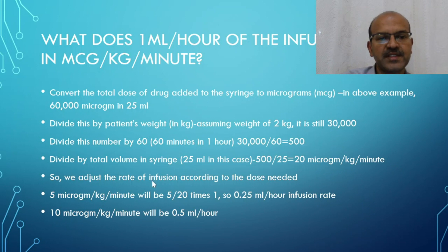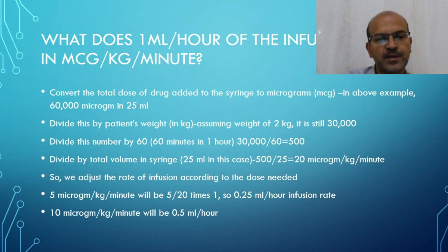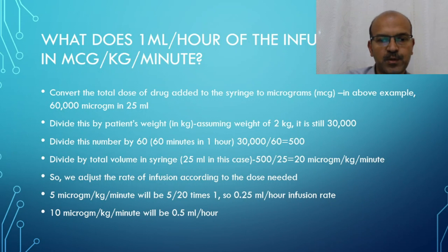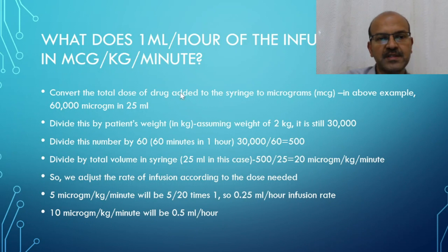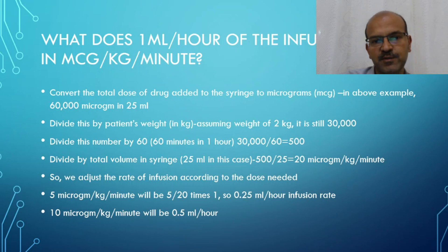We adjust the infusion rate according to the dose needed. If you need 5 micrograms per kilogram per minute, that is one-quarter of 20, so the rate is 0.25 mL per hour. If you need 10 micrograms, it is 0.5 mL per hour. If you need 20 micrograms, it is 1 mL per hour. This is how you calculate the infusion rate once you know the strength of the solution.